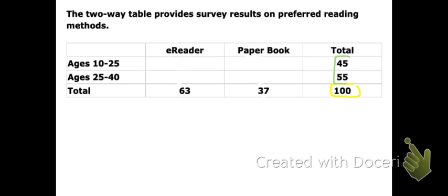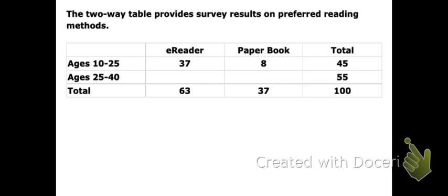These numbers here add up to 100 — the ages add up to 100, and these numbers here also add up to 100. Now let's talk about the middle part of the table. If we look at the first row for ages 10 through 25, it's breaking up those 45 people into the number that prefer e-readers and paper books.